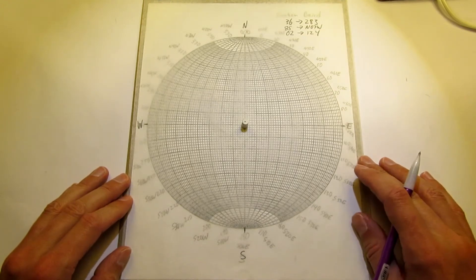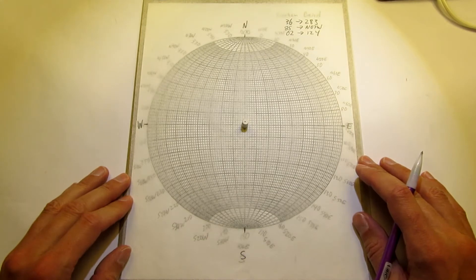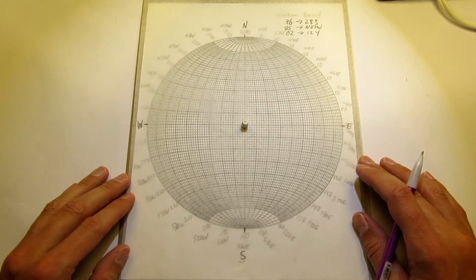Okay, so the last skill is going to be plotting lines on the stereo net. And this actually could be the easiest of the three ways to plot data on the stereo net.